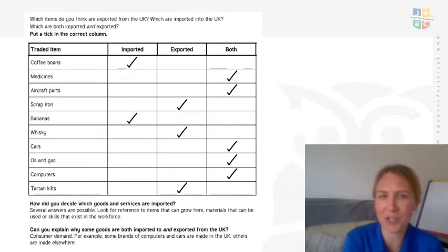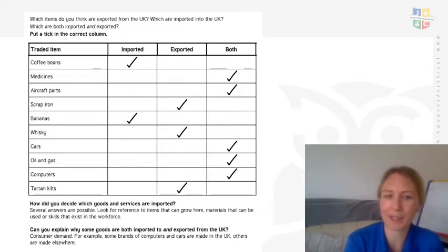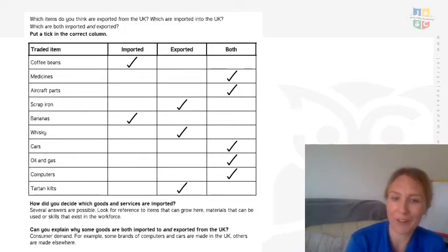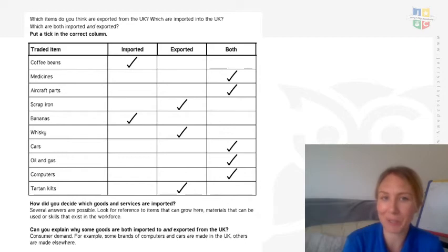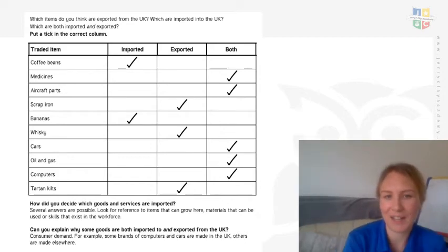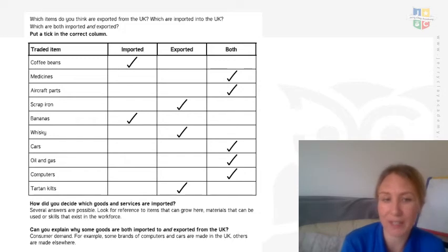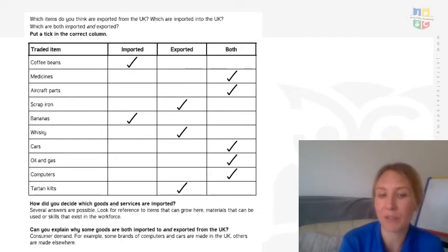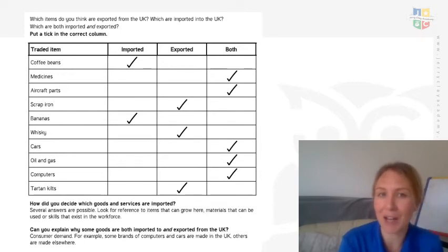And then if we have a look at the two questions. So how did you decide which goods and services are imported? You might have done a bit of guessing and then backed that up with research. Several answers can be possible, but you would have hopefully thought about things that can grow here and materials that exist here. And can you explain why some goods are both imported and exported from the UK? It's because of consumer demand — what people want. For example, some brands of computers and cars are made in the UK, so other countries want them, whereas others are made elsewhere and people in the UK want those.